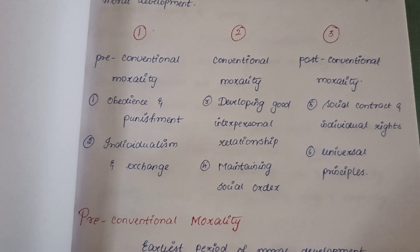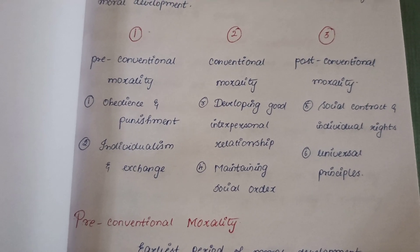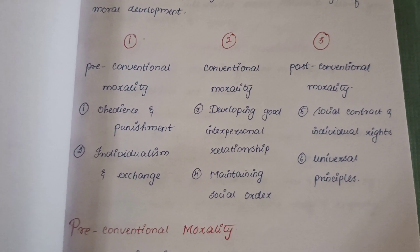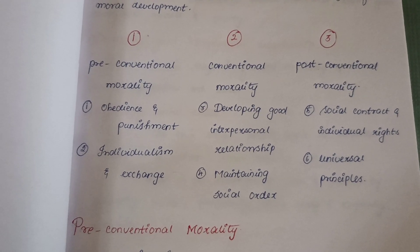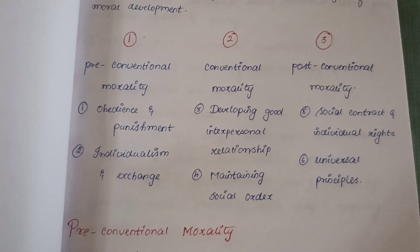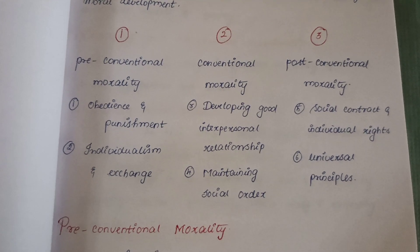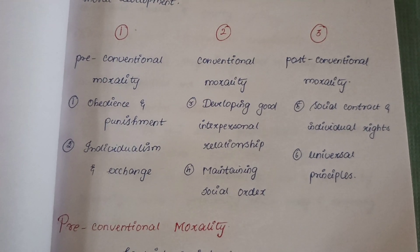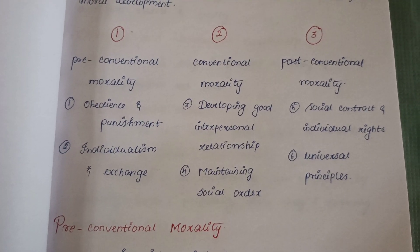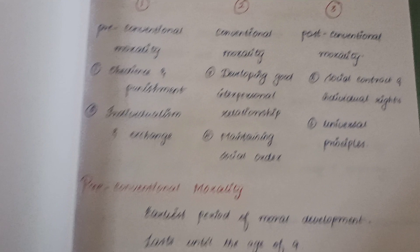Under pre-conventional morality, the two stages are obedience and punishment, and individualism and exchange. Under conventional morality, the stages are developing good interpersonal relationships and maintaining social order. Under the post-conventional level, the stages are social contract and individual rights, and universal principles.